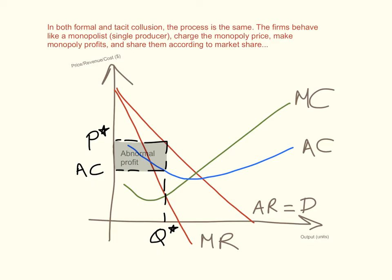Whether it's formal or tacit collusion, the process is the same. The firms behave like a monopolist — a single producer. They charge the monopoly price and make monopoly profits, sharing those profits according to market share. The profit-maximizing output is where marginal revenue intersects marginal cost. Drawing a vertical line gives the profit-maximizing quantity, and extending it up gives the average cost at that quantity and the price. The difference between both is the abnormal profit — shown as the gray shaded box in the diagram.